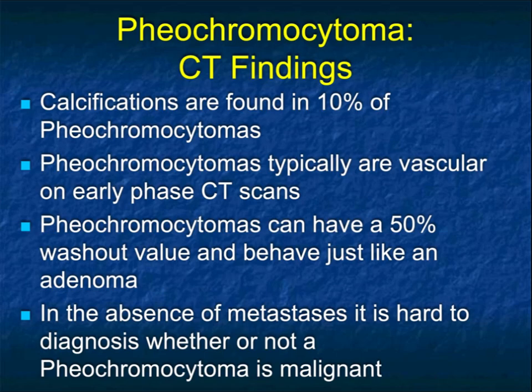The next tumor to mention is pheochromocytoma. The classic presentation is patients with hypertension and an unexplained vascular adrenal lesion. In fact, half the pheos we find are incidental findings. Their appearance is variable — 10% have calcification. Pheos have the rule of 10: 10% are malignant, 10% are hypervascular, 10% are bilateral. Pheos can be associated with syndromes, and when syndromic they tend to be smaller. In the absence of metastasis, it's almost impossible to tell whether a pheo is or is not malignant.